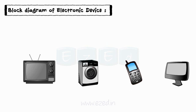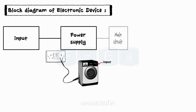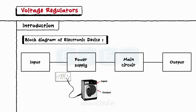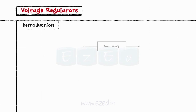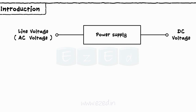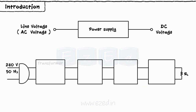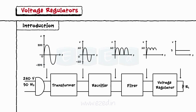Every electronic device is made up of some basic sections: power supply section, input section, main section, and output section. We will only focus on the power supply section. The power supply section is one of the most important sections as it converts the line voltage into DC voltage, which acts as an input to that device. A basic power supply consists of a transformer, followed by a rectifier, a filter, and at the end, a regulator. We have already studied transformer, rectifier, and filter, so in this chapter we will only focus on regulators.